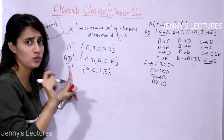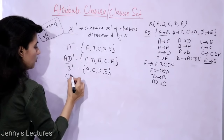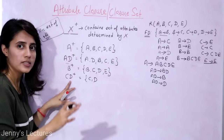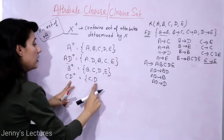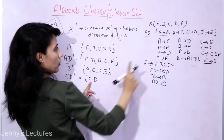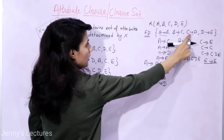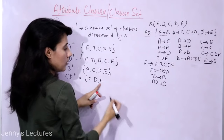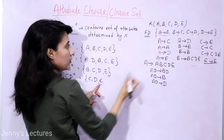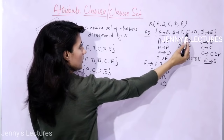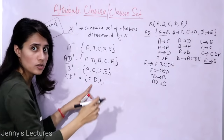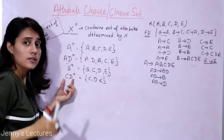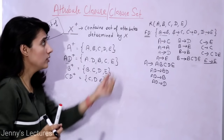Let's find the closure of CD. Write down C and D by reflexivity. Check: A determines B — no A. B determines C — no B. C determines D — we have C, but D is already written. D determines E — we have D, so write E. Check again: no A, no B; no change in this iteration, so stop. CD⁺ = {C, D, E}. If you have CD, you can only determine C, D, and E — you cannot determine A or B.